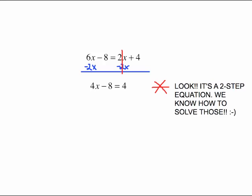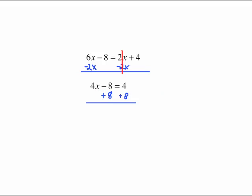At this point you should recognize it's a two-step equation and we know how to solve those. So we solve this by adding 8 to both sides. These 8's cancel out. Do the arithmetic on the right side and you'll have 4x equals 12. 4x means 4 times x. Undo the multiplying by dividing both sides by 4 and we get x equals 3.